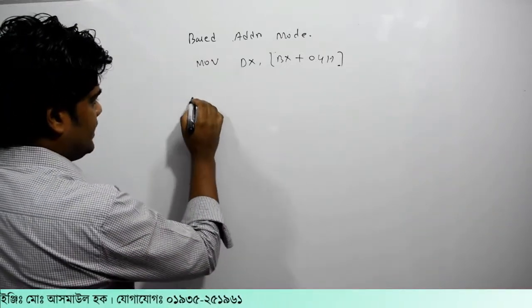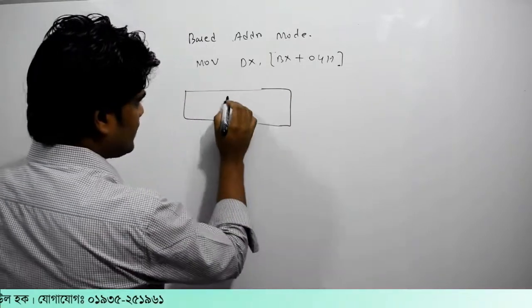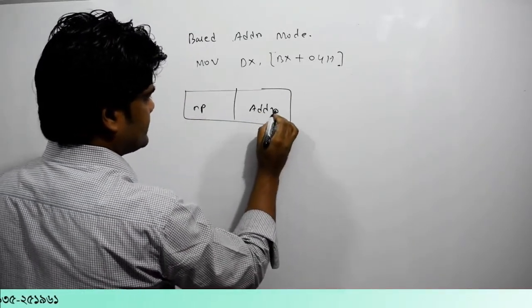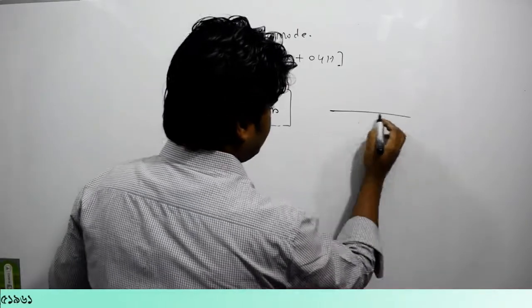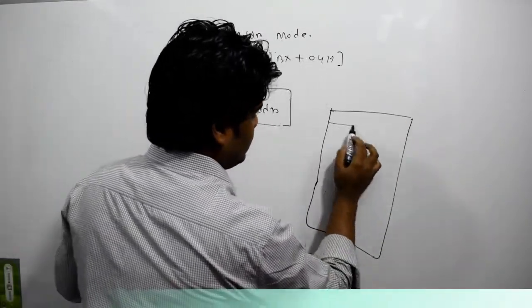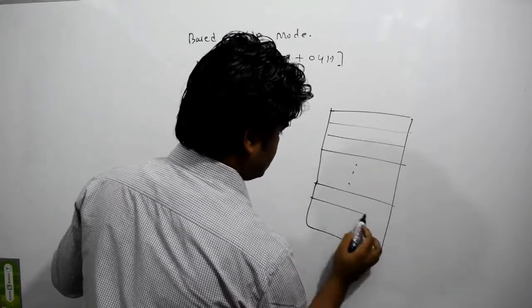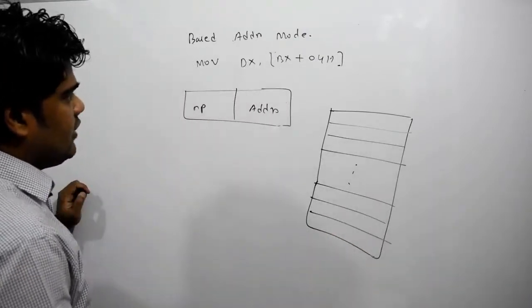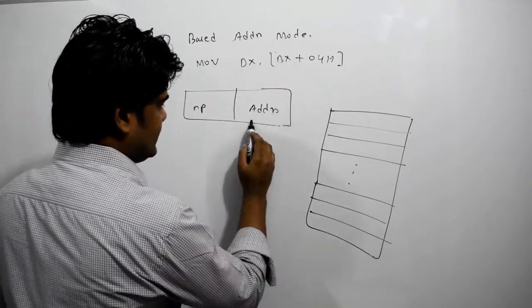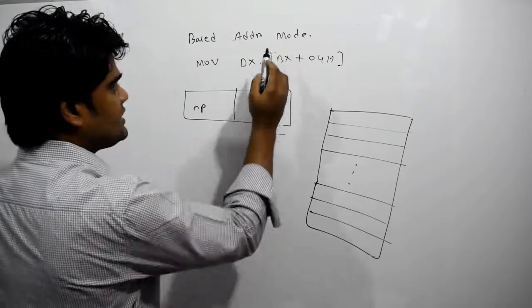We have two parts here: one part is the operation, and the other part is the address. One part refers to memory, and the other to the operation code. So, this is BX — BX is the address register used in the base addressing calculation.